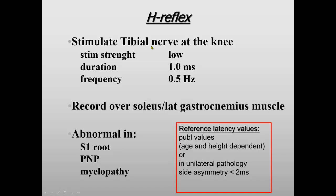The protocol is that we stimulate the tibial nerve with low stimulus strength and long duration to favor the sensory nerves, and at a very low frequency because of habituation, where reflexes disappear. That is not true for F-responses but is true for the H-reflex. We record over soleus or gastrocnemius, and it is useful for S1 radiculopathy and also polyneuropathy and myelopathy. The reference values: you can use published values related to height and age, but in unilateral S1 radiculopathy you can use side asymmetry to guide — the asymmetry should be less than 2 milliseconds if you use exactly identical electrode positions.